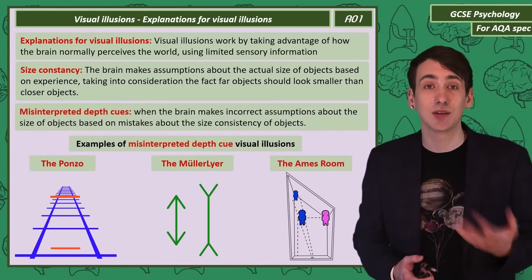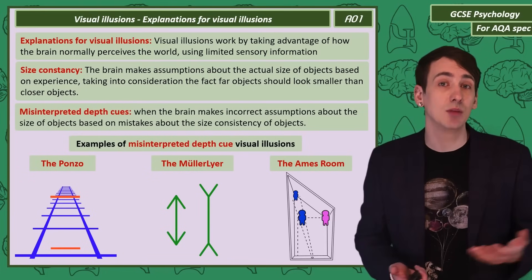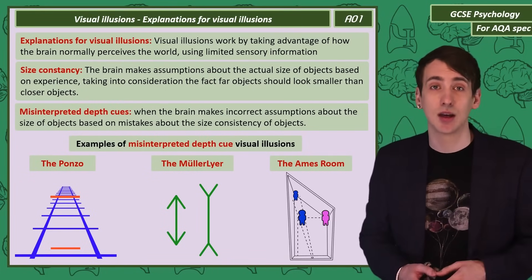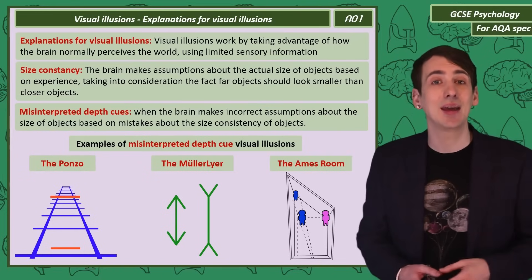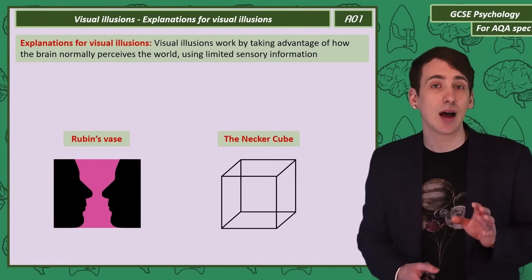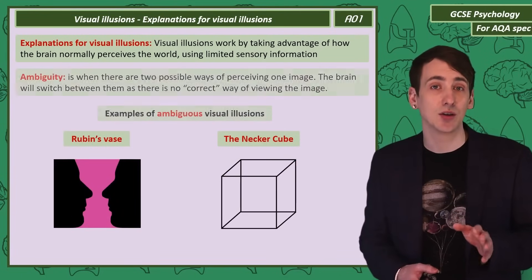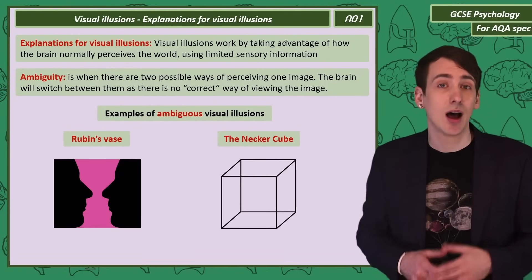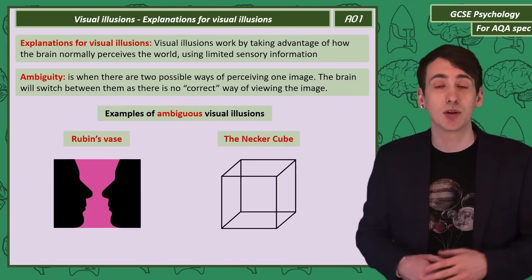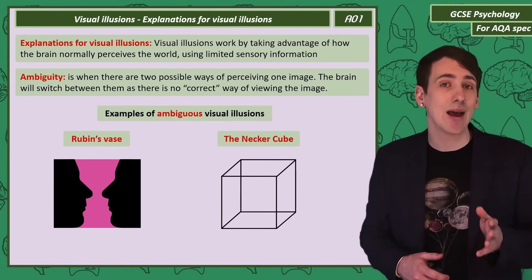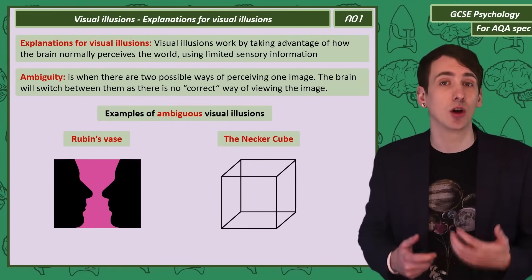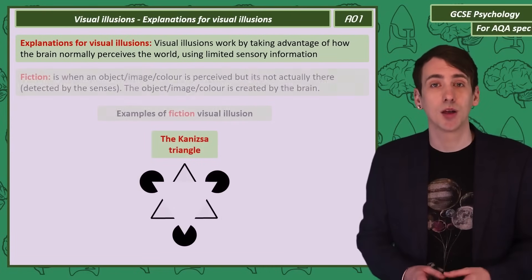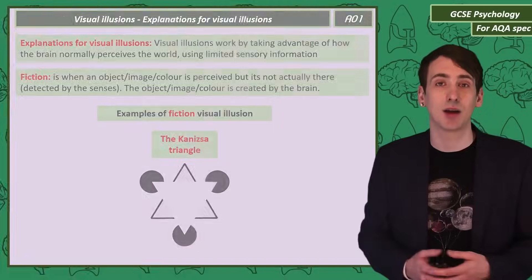The brain can be incorrect in assuming size constancy because it has misinterpreted depth cues. We can see examples of misinterpreted depth cues in the Ponzo, the Muller-Lyer, and the Ames Room. Ambiguity is when the brain doesn't have visual cues that suggest features like depth or distance, so there isn't a correct way of perceiving an image and the brain jumps between interpretations — Rubin's Vase and the Necker Cube are both examples. Finally, the Kanizsa Triangle is an example of a fiction: the brain perceives something that isn't detected by the senses.